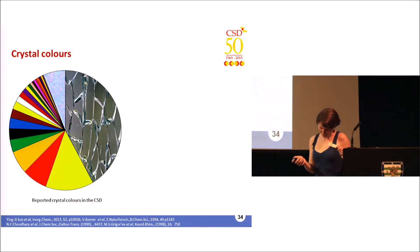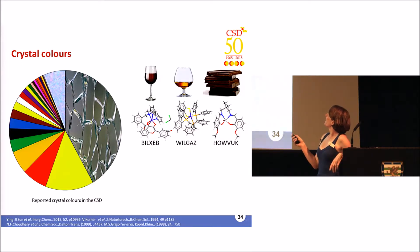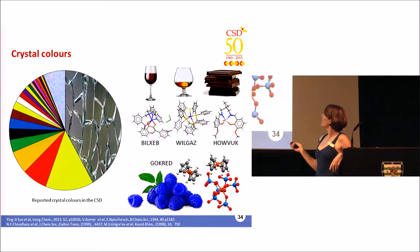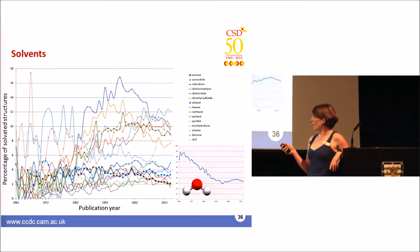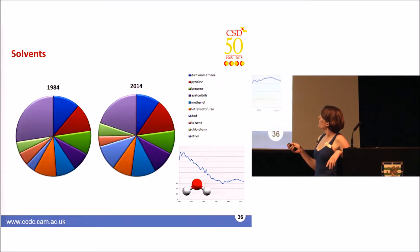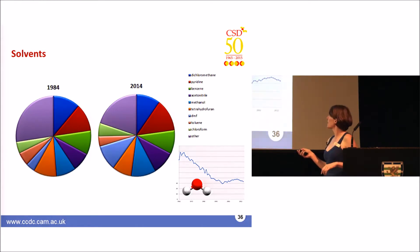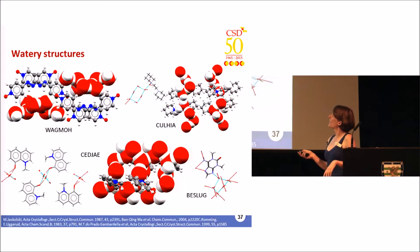Moving on from morphologies, we can look at crystal colors. The most common color is unsurprisingly colorless, followed by yellow, red, and orange. But there's also an 'other' category that might say more about the crystallographer than the crystal — we've got lots of wine-colored crystals, a few cognac, and lots of chocolate. But I think my favorite crystal color is still 'raspberry blue.' We can also look at trends in solvents by examining solvated structures in the database — fashions have changed, and things like DMF have gone up from 1984 to 2014.